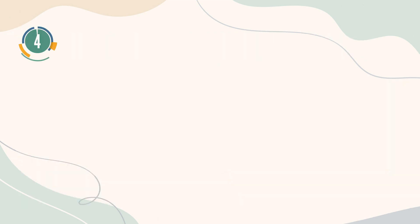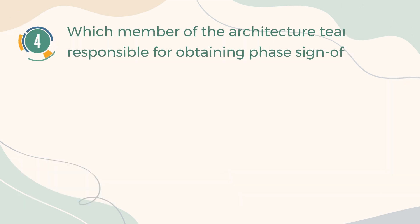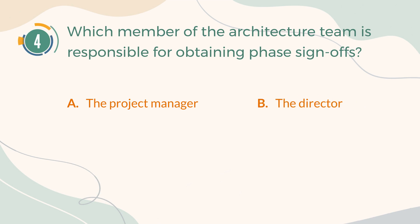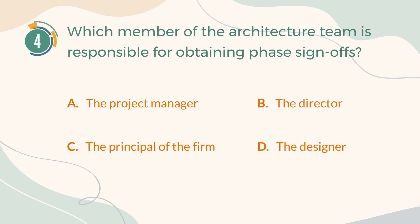Number 4. Which member of the architecture team is responsible for obtaining phase sign-offs? A. The project manager. B. The director. C. The principal of the firm. D. The designer.